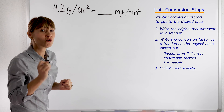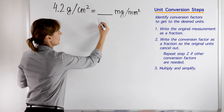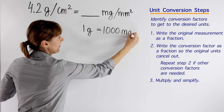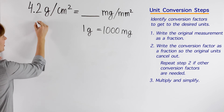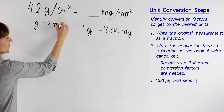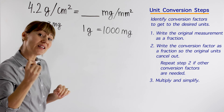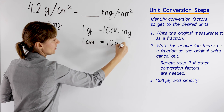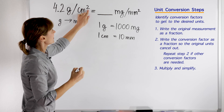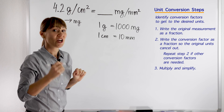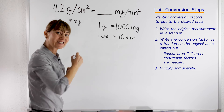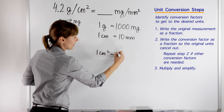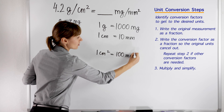You can look up in any conversion chart and find that 1 gram equals 1000 milligrams. This will help us to change from grams to milligrams. Another conversion factor: 1 centimeter equals 10 millimeters. But we need square centimeters and square millimeters. Your conversion chart may also have this conversion factor: 1 centimeter squared equals 100 millimeters squared.